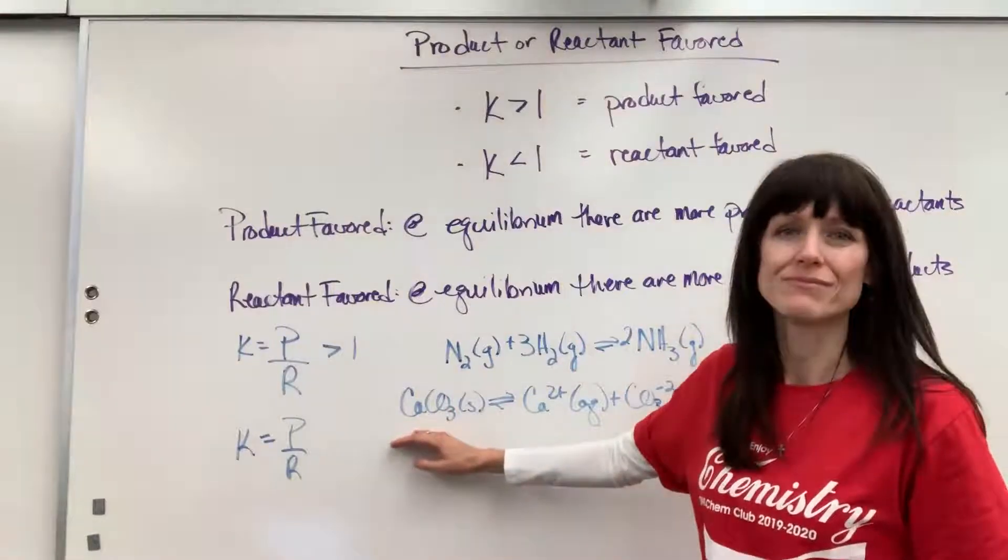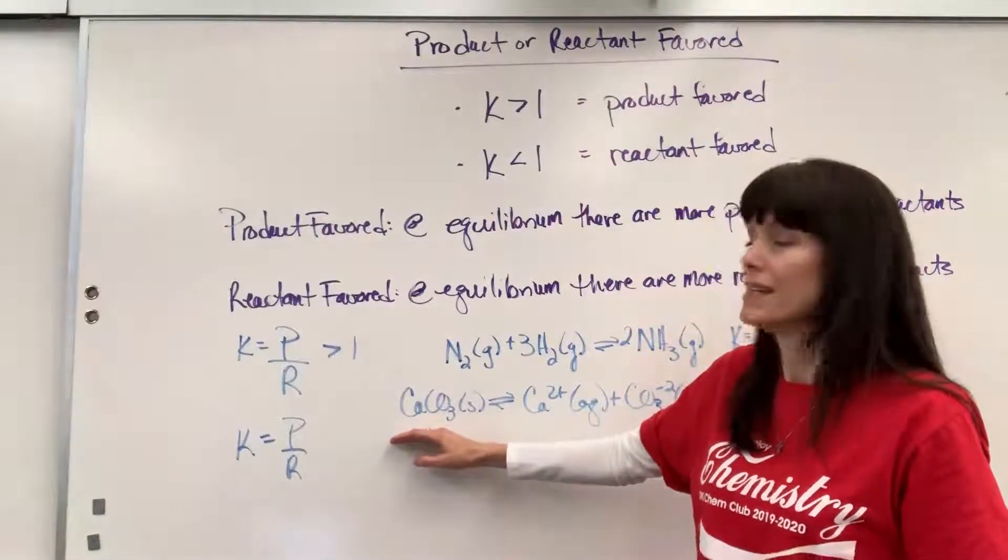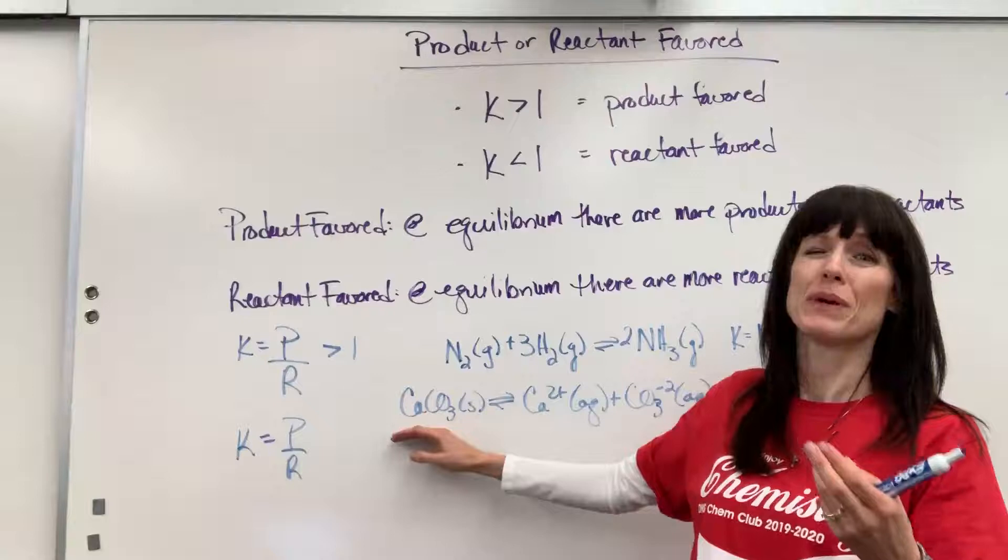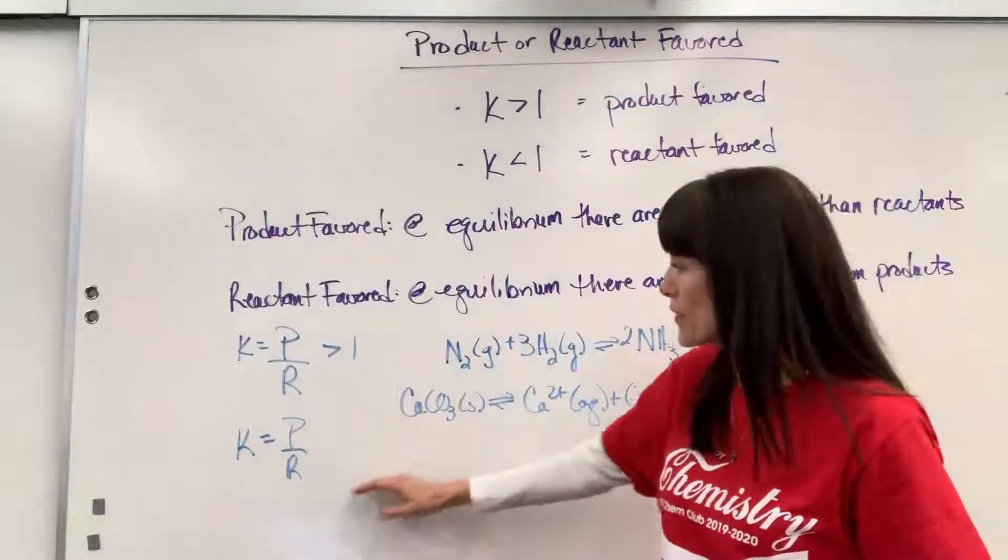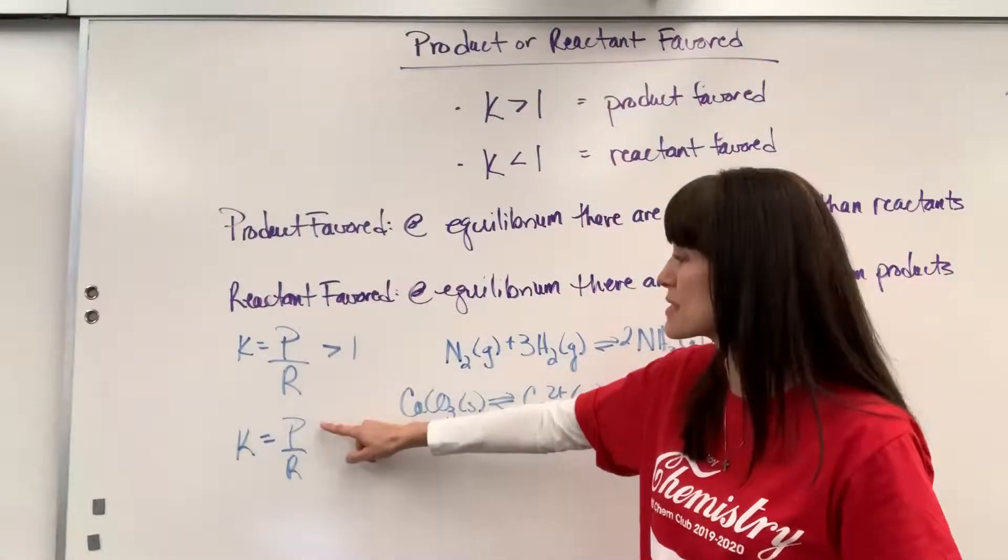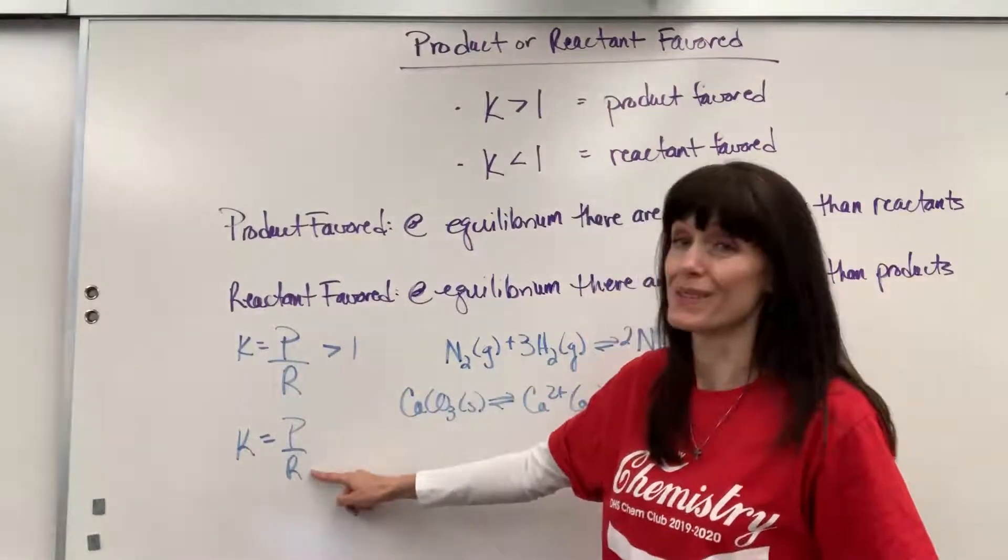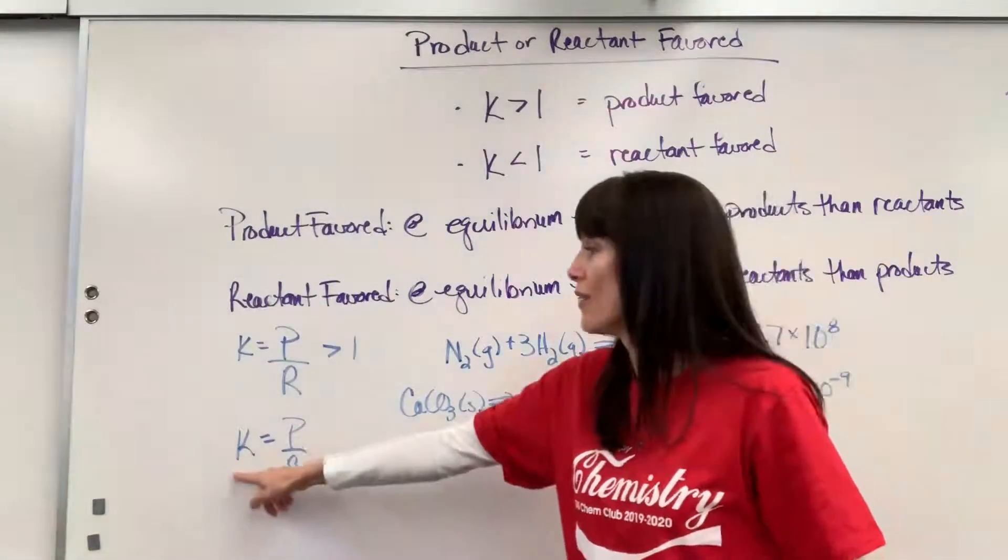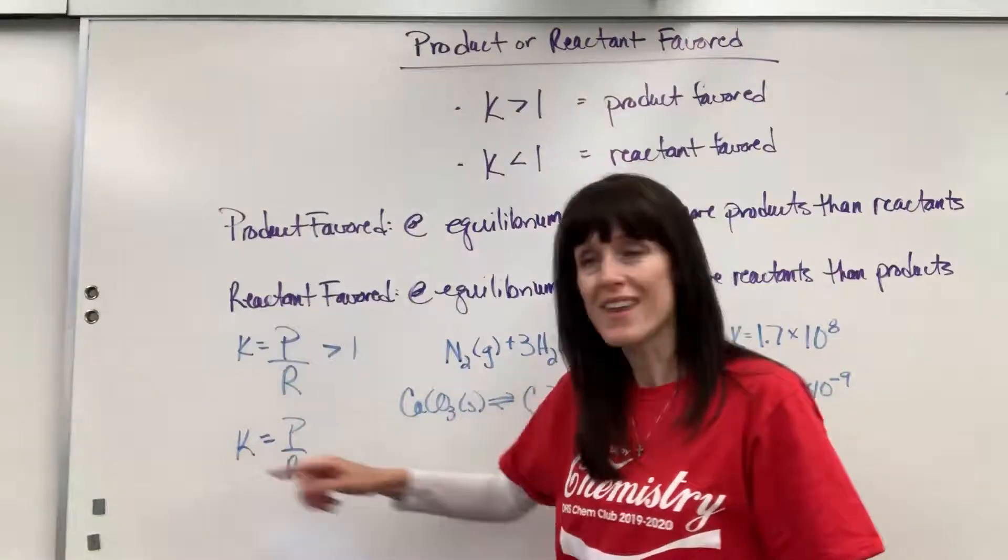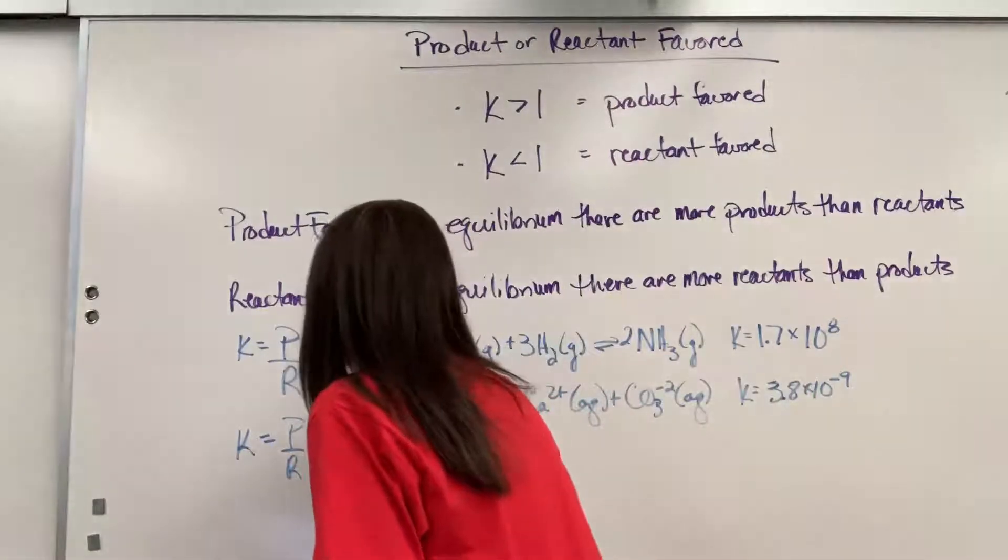So calcium carbonate, for all intents and purposes, it really is not soluble. Barely, barely, barely dissociates. So I have a huge amount of reactants, a small, tiny amount of products. Well, if you have a small numerator and a large denominator, the value is less than one. So K is going to be less than one.